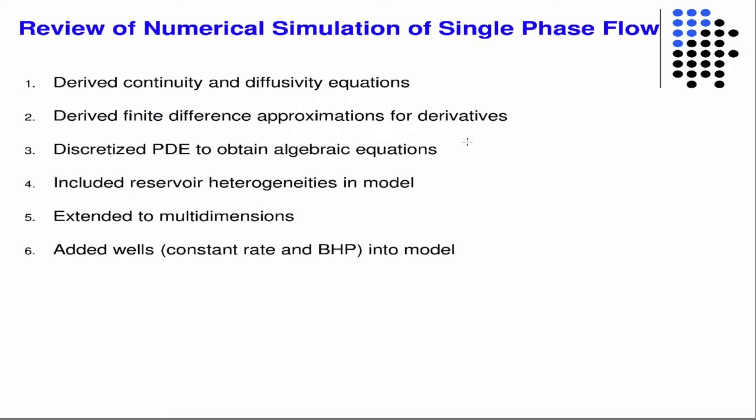Also, we covered the finite volumes, sort of control volume approach. We included heterogeneities. We did all of that in 1D. We wrote your homework for, right? It was a 1D code including heterogeneities and other things. And then we extended that to 2D or multiple dimensions. And then in 2D we added wells and we talked about boundary conditions and other things.